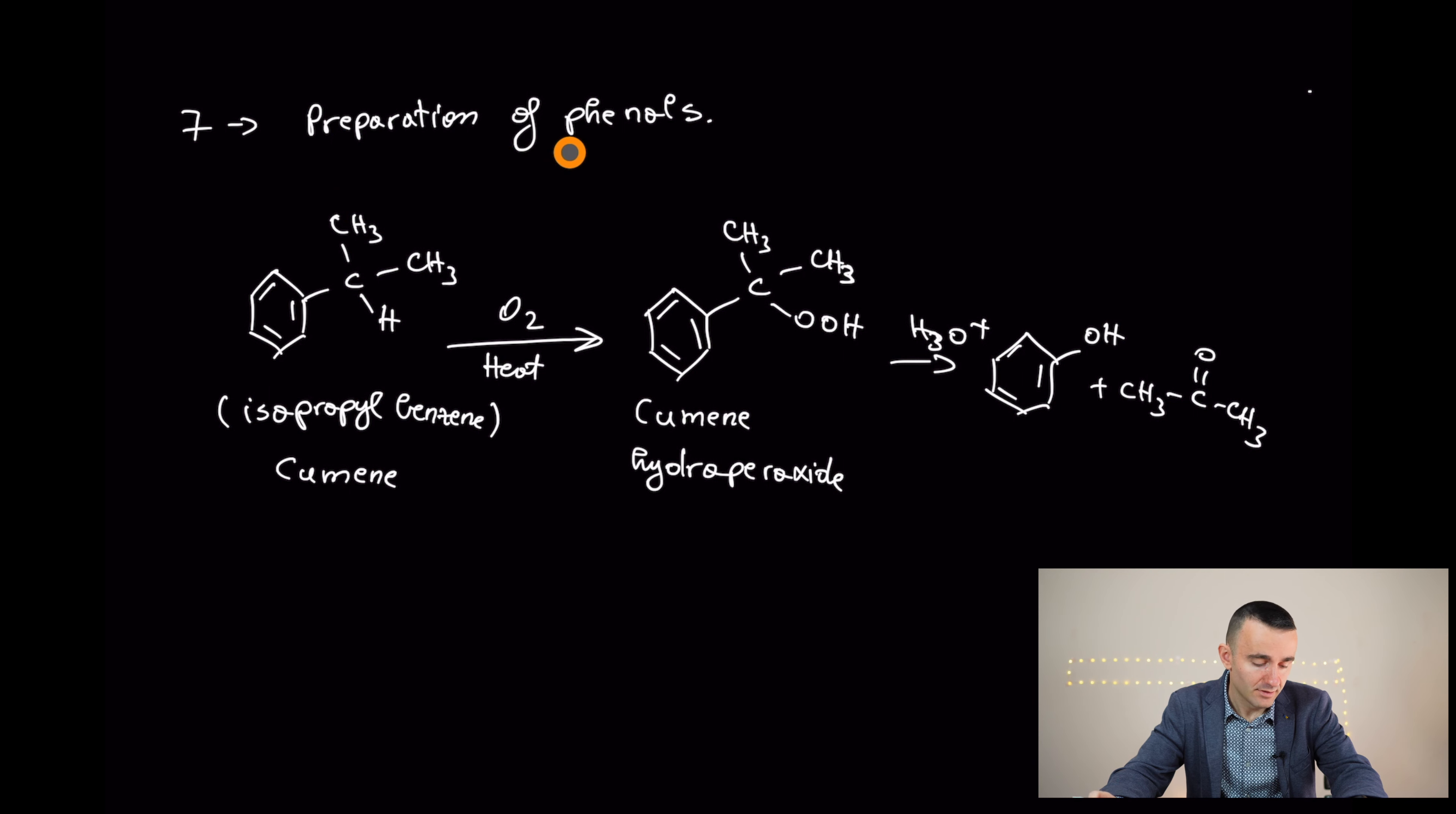Preparation of phenols. You can start from isopropyl benzene or cumene, treated with oxygen under hot conditions. And you are going to yield cumene hydroperoxide, this one here. And after that, in aqueous acid medium, you are going to yield the phenol, also acetone. Both products are beneficial. Okay? This is one way to prepare phenols.